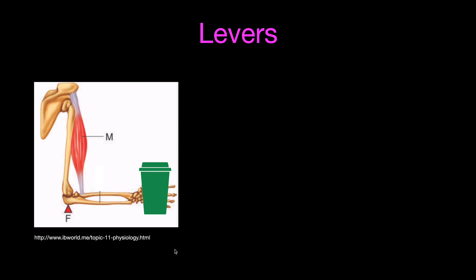Now the final and possibly most interesting example: your arm is a third-class lever. Looking at the bones in your arm — shoulder, upper arm, lower arm, hand — imagine holding a cup of coffee. The coffee is the output force you're lifting to your mouth. The input force comes from your bicep muscle, attached just below your elbow, very close to the fulcrum. The coffee weighs 2.9 Newtons, the fulcrum is at the elbow, and the input force (muscle attachment) is between the fulcrum and the output force — confirming it's a third-class lever.